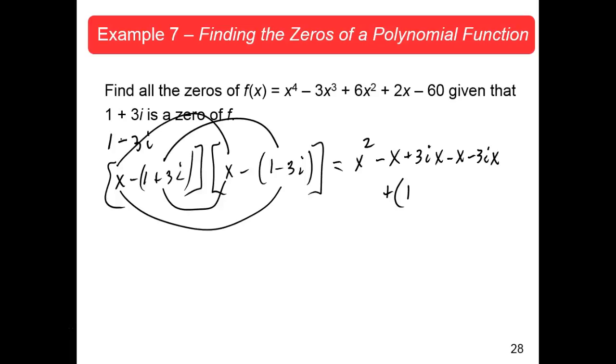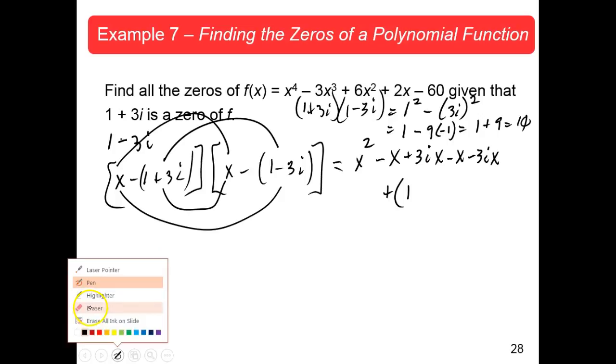This is another FOIL here: 1 + 3i times 1 - 3i. Does anyone remember what the product of two conjugates are? It's the first one squared minus the second one squared. This will be 1 squared minus (3i) squared. 1 squared is 1. 3 squared is 9, and i squared is negative 1. So this is 1 minus negative 9, which is 1 plus 9, equals 10.